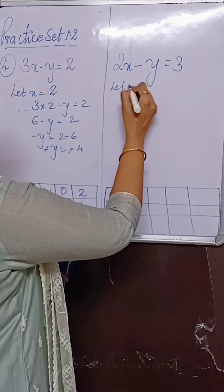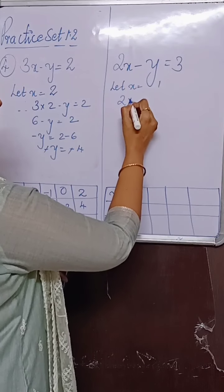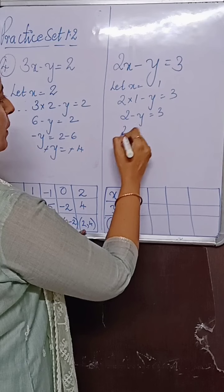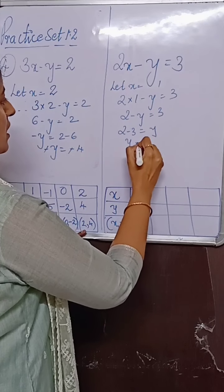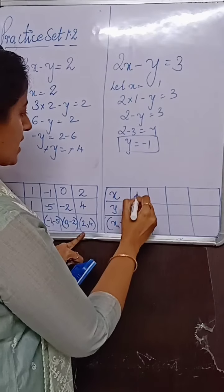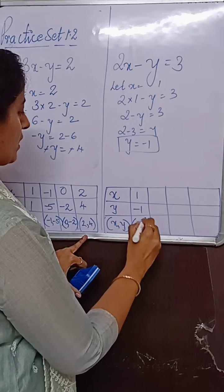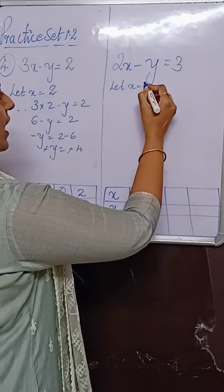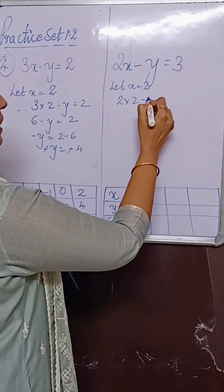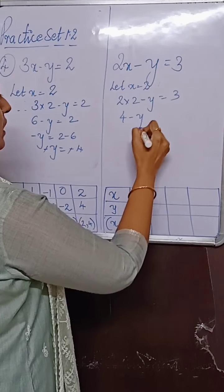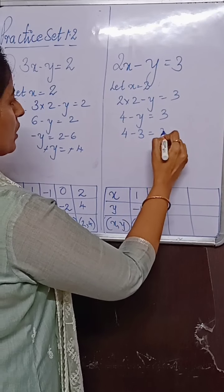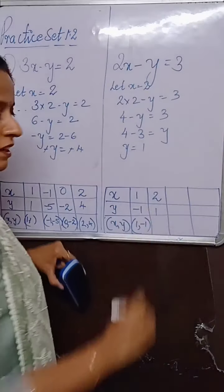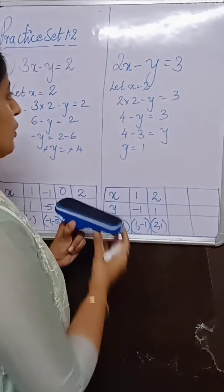For the second equation, let x equal to 1. So 2 into 1 minus y equals 3, giving 2 minus y equals 3, so 2 minus 3 equals y, therefore y equals minus 1. When x is 1, y is minus 1 — ordered pair 1 comma minus 1. Next take x as 2: 2 into 2 minus y equals 3, so 4 minus y equals 3, giving y equals 1. Ordered pair: 2 comma 1.